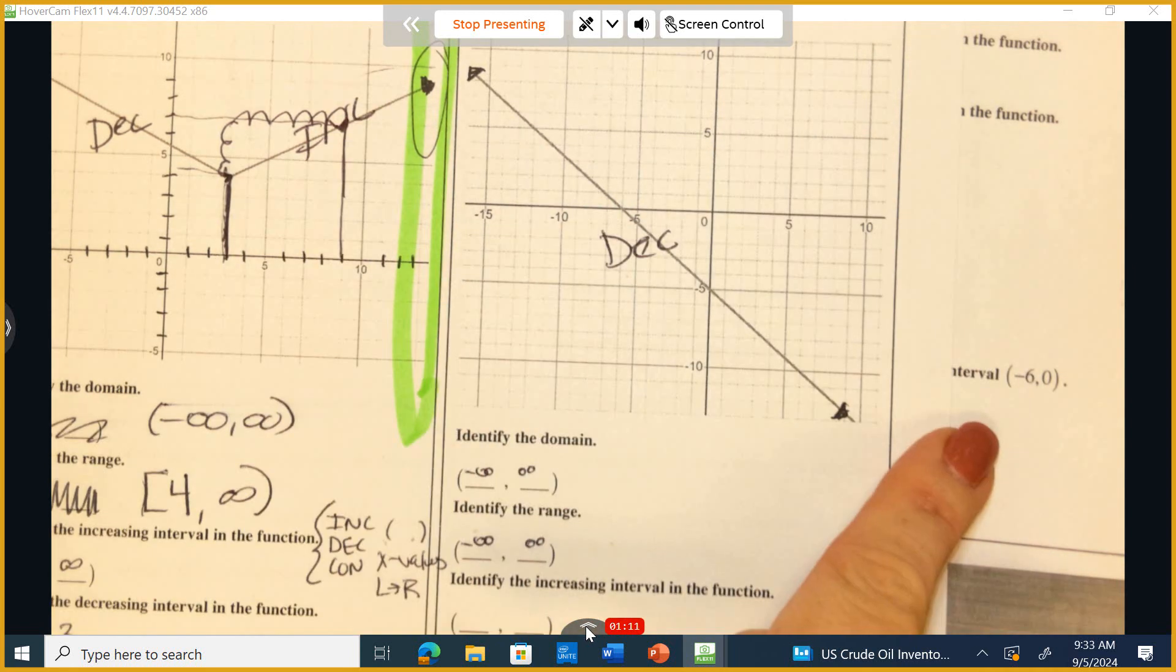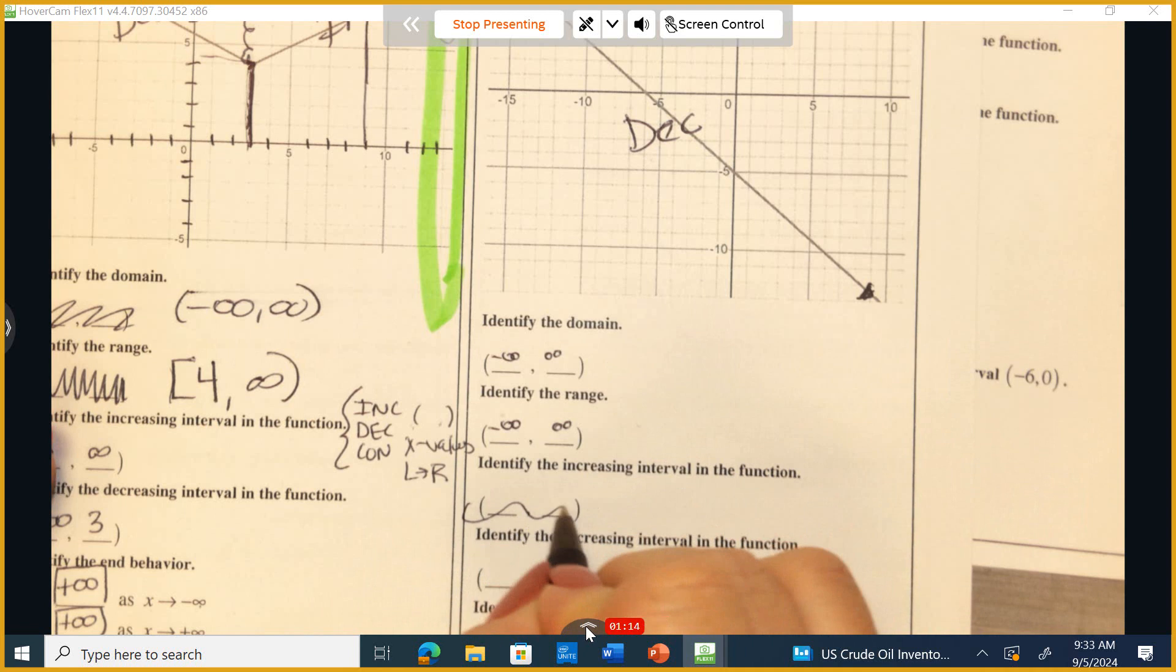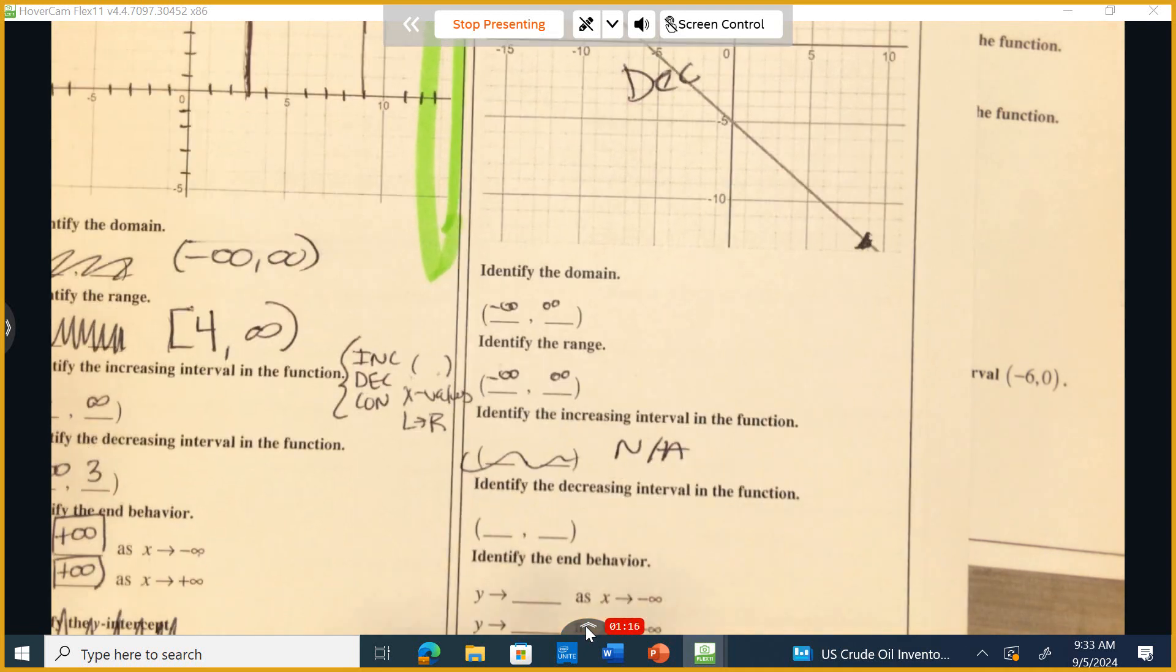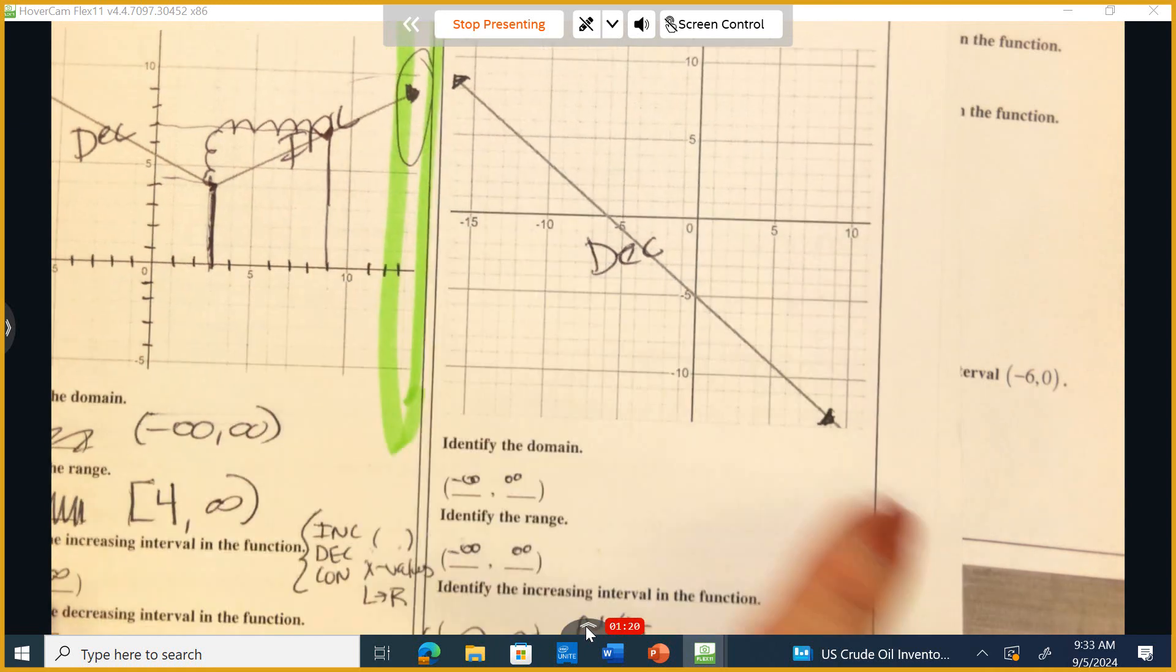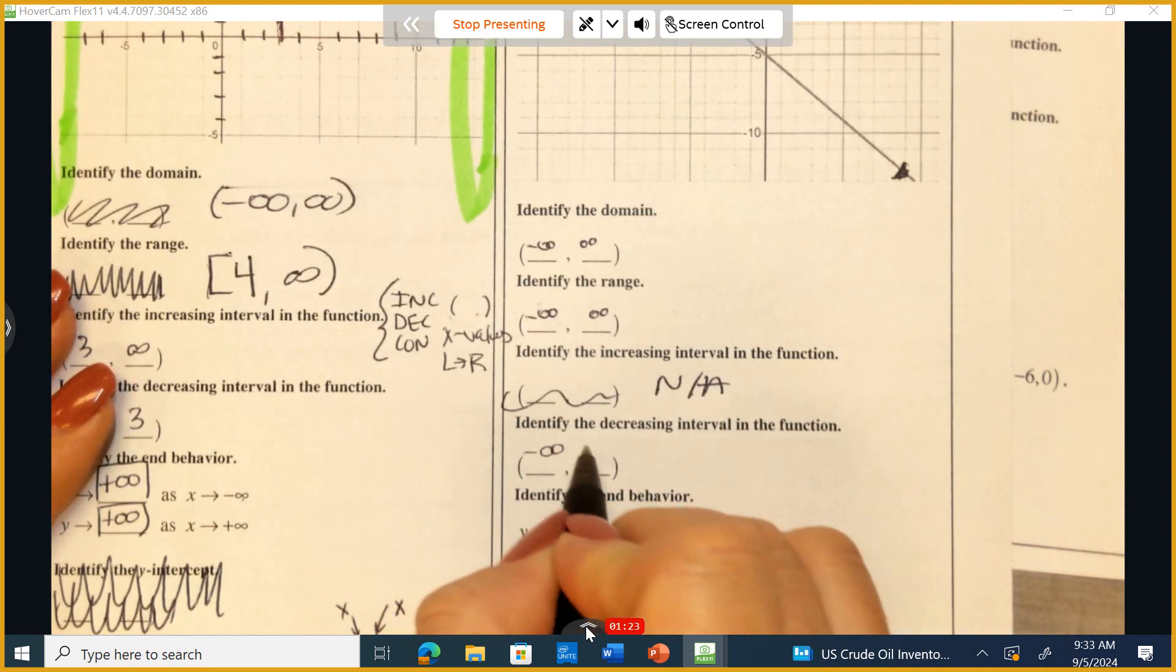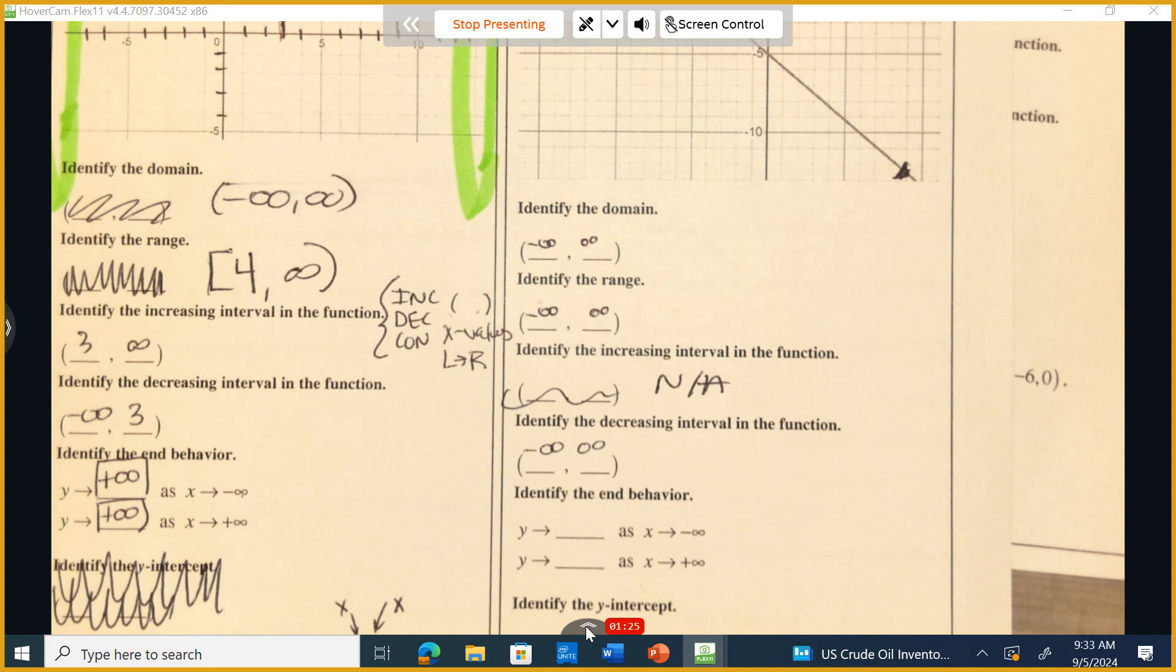So there's only one piece to this function, so there is no increasing. I'm going to say there is none available. And the entire length of this graph is decreasing the entire way. So negative infinity to positive infinity, the entire way is decreasing.